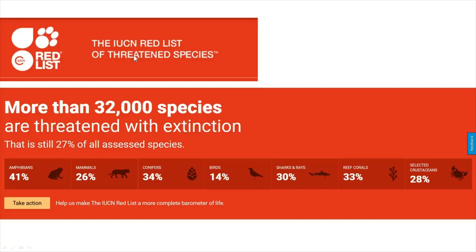According to the latest IUCN Red List, which you can find on their official website, more than 32,000 species are currently threatened with extinction. IUCN has assessed about 120,000 different species of plants and animals and found that 32,000 of them are threatened with extinction right now.